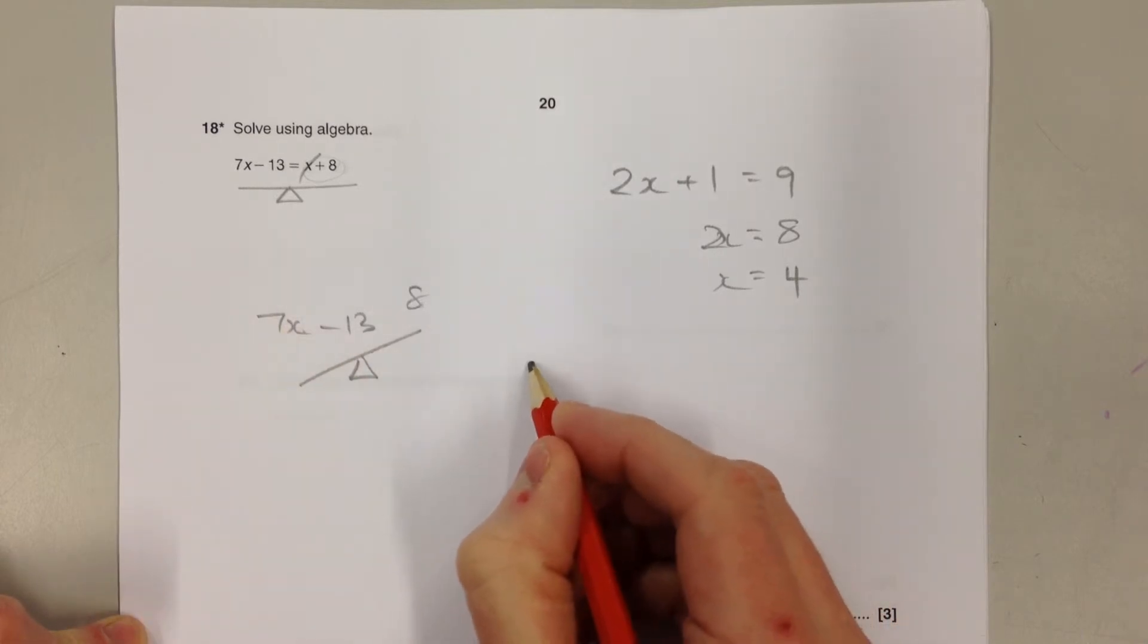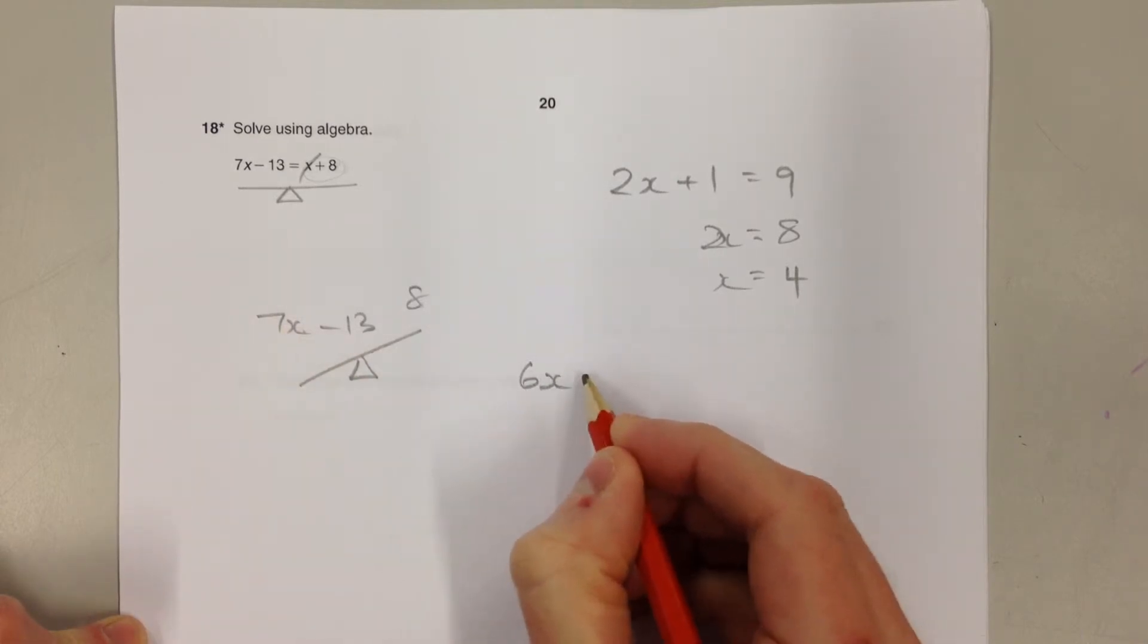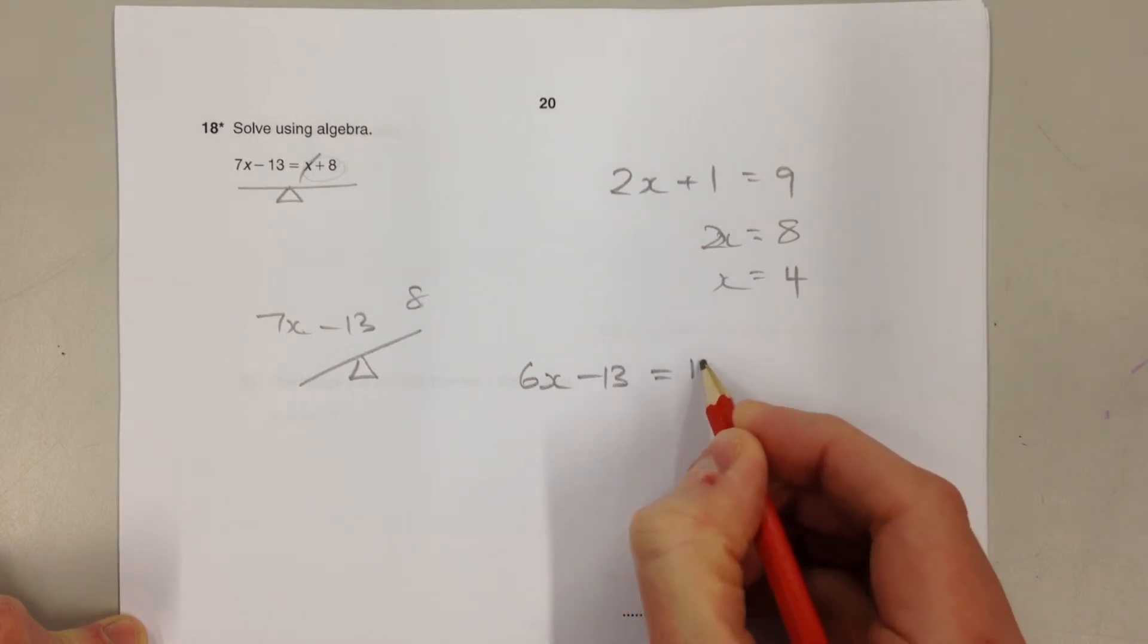And if we take 1x from the left-hand side, we're left with 6x minus 13. We can put the equals sign back in because these two are now balanced.